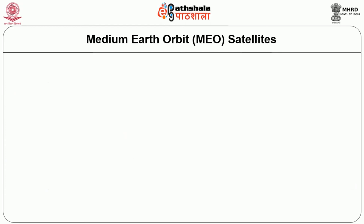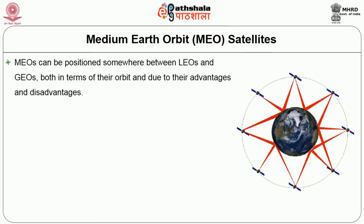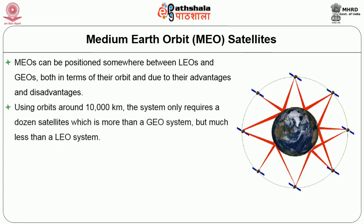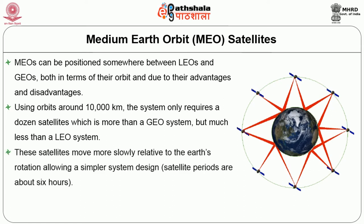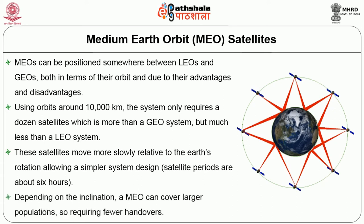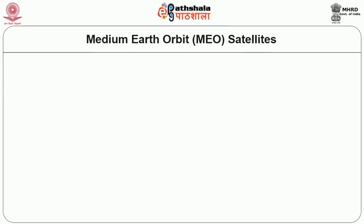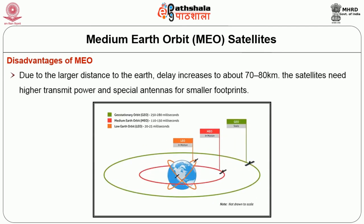The next type is Medium Earth Orbit satellites, called MEO. MEOs can be positioned somewhere between LEOs and GEOs, both in terms of their orbit and in terms of their advantages and disadvantages. Using orbits around 10,000 km, the system only requires about a dozen satellites — more than GEO systems but much less than a LEO system. These satellites move more slowly relative to earth's rotation, allowing a simpler system design. Depending on the inclination, a MEO can cover large populations, requiring fewer handovers. The disadvantage of MEO satellites is that due to the larger distance to earth, delay increases to about 70-80 ms, and the satellites need higher transmit power and special antennas for smaller footprints.